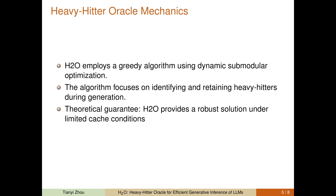The Heavy Hitter Oracle operates through a dynamic greedy algorithm. This algorithm's objective is to identify and retain the most influential tokens — the heavy hitters — during the generative process. Notably, H2O comes with a theoretical guarantee, ensuring its robustness and effectiveness even under limited cache conditions. This makes it a highly reliable solution in practical, real-world applications.